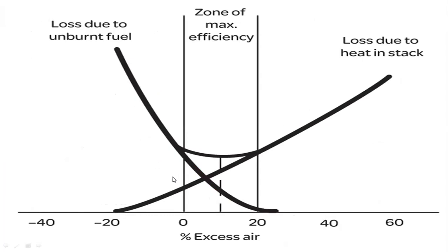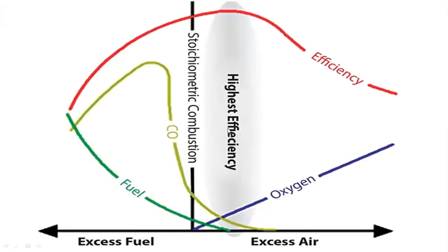When it comes to the zone of maximum efficiency, you always require 20% more than the stoichiometric requirement of oxygen or air, which we normally call excess air. Every air-to-fuel ratio is normally 14:1, so for every kg of carbon you need to give 14 kg of air. You also have a stoichiometric requirement; beyond that you need to give a minimum of around 10% and a maximum zone of efficiency tolerable up to 20%. Loss due to unburnt fuel will be more in the region of less air, and if there is more air, you have a loss due to heat in the stack. Both extremes are not desirable. The zone of maximum efficiency — the combustion efficiency zone — is around 10 to 20% excess air.